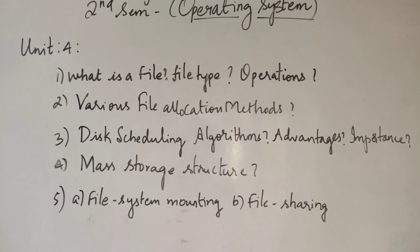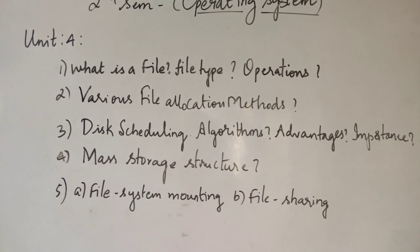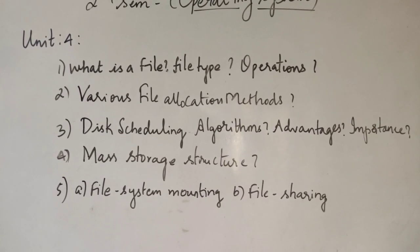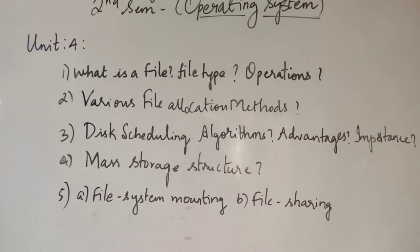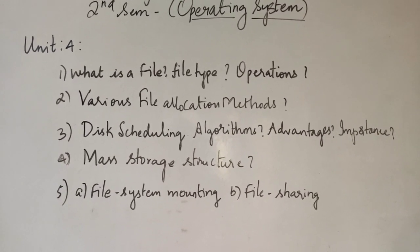Fourth question is mass storage structure. You need to look at the structure of this mass storage. Fifth question is file system mounting and file sharing. They can be asked for short answer questions. Now we'll move to unit 5.